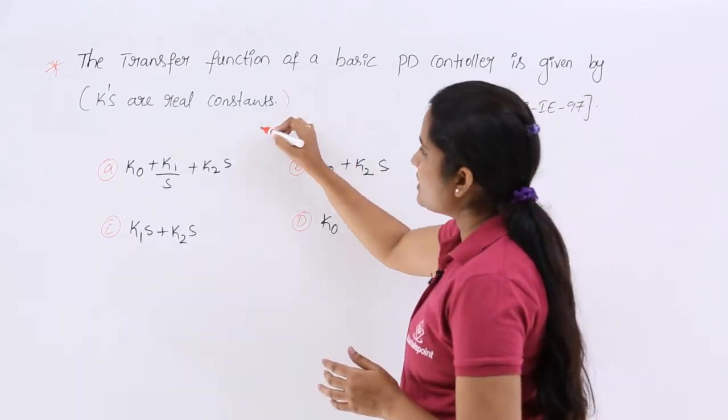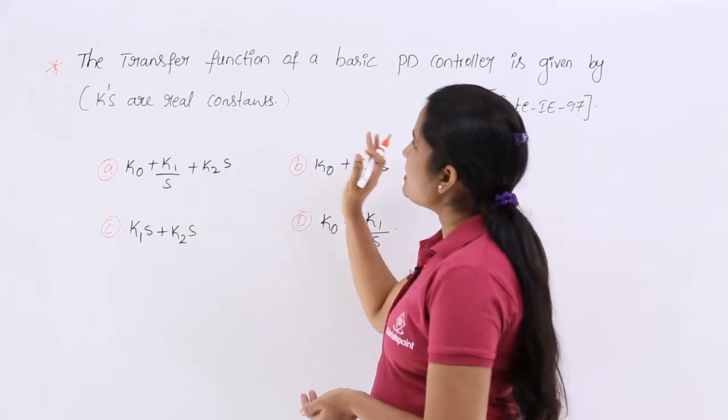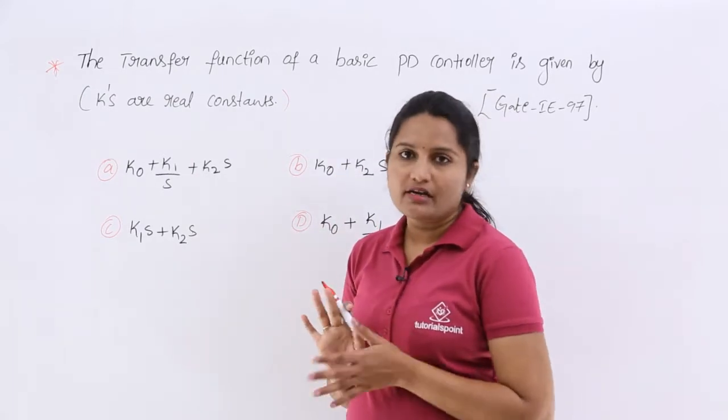So Ks are real constants, they are given in brackets. What is the transfer function of PD controller? Finally, they are asking.